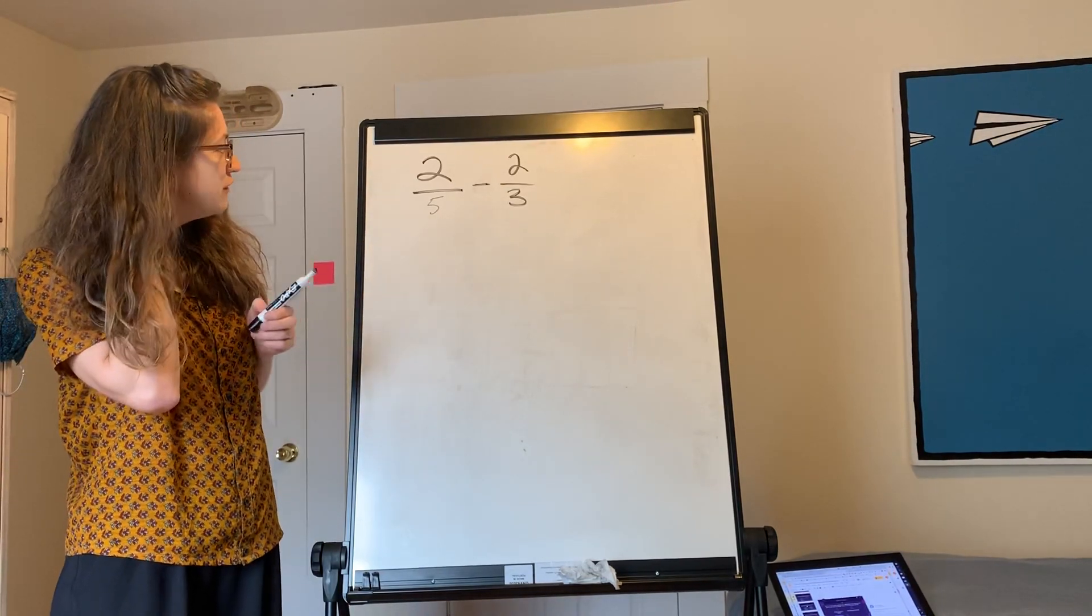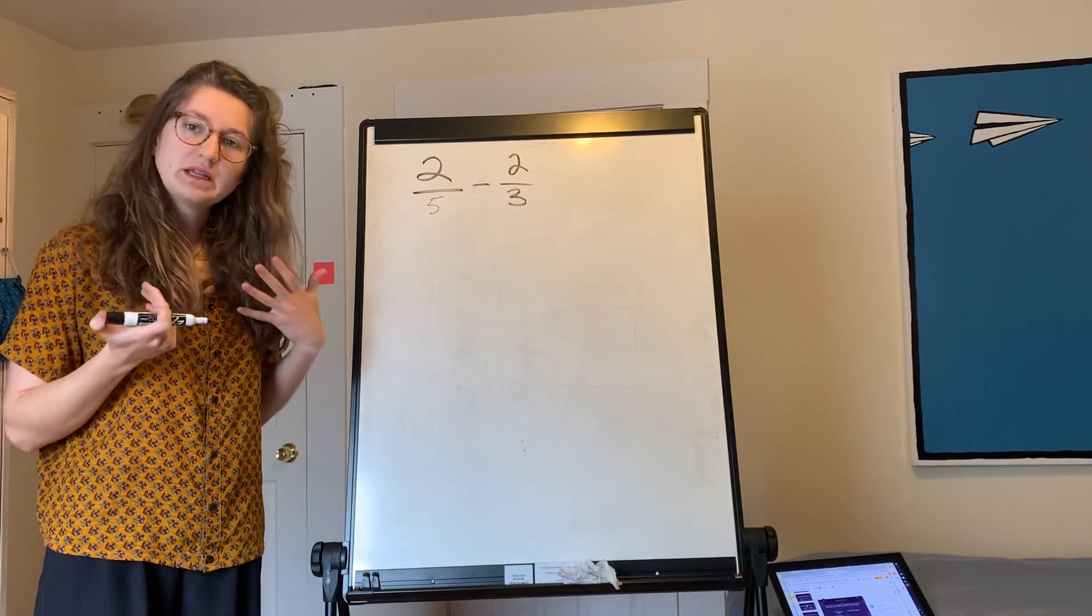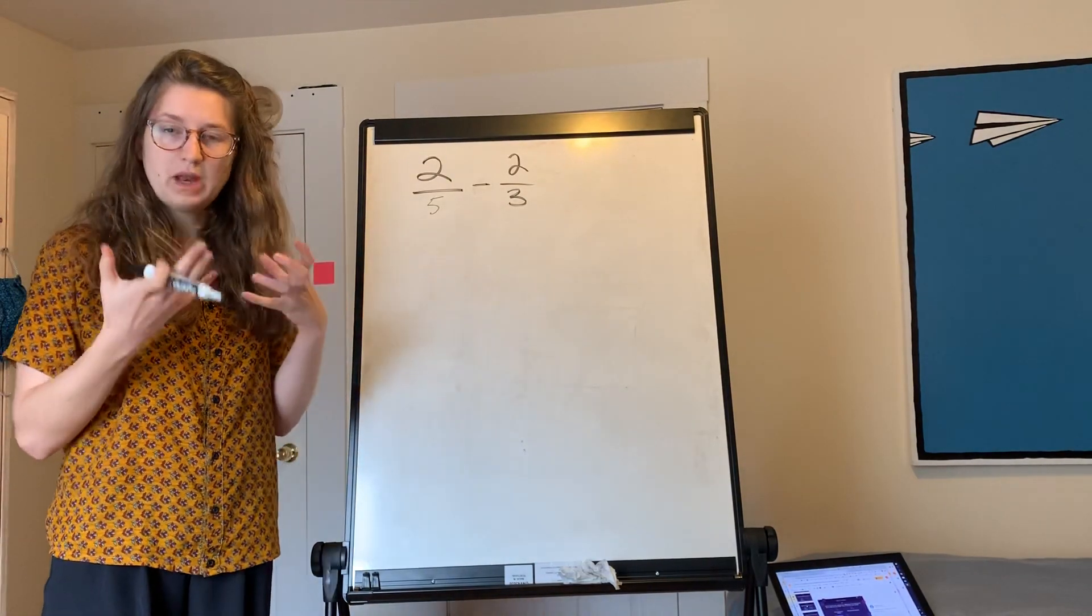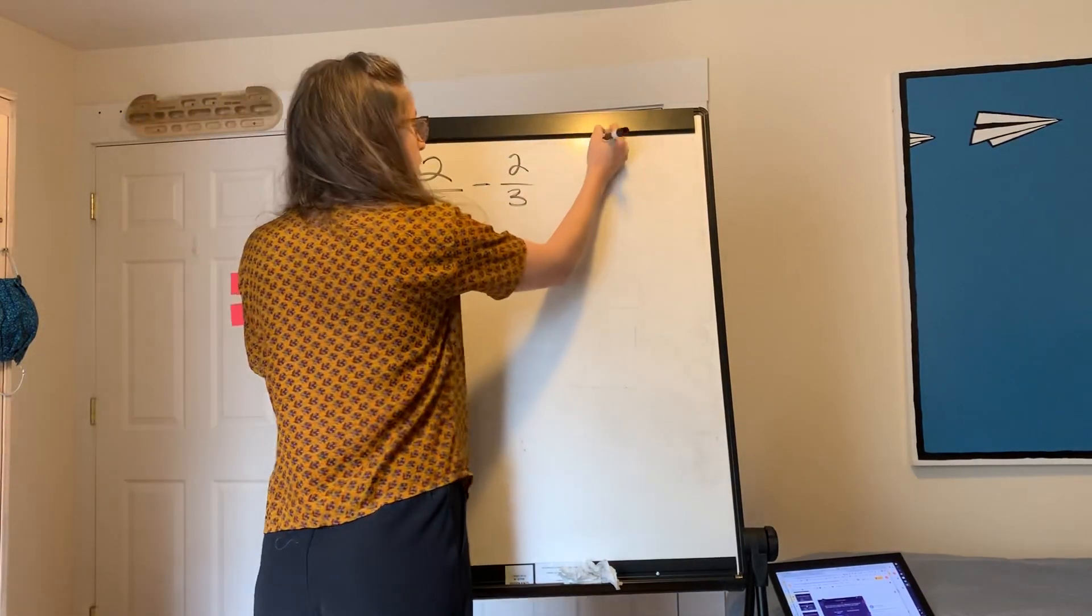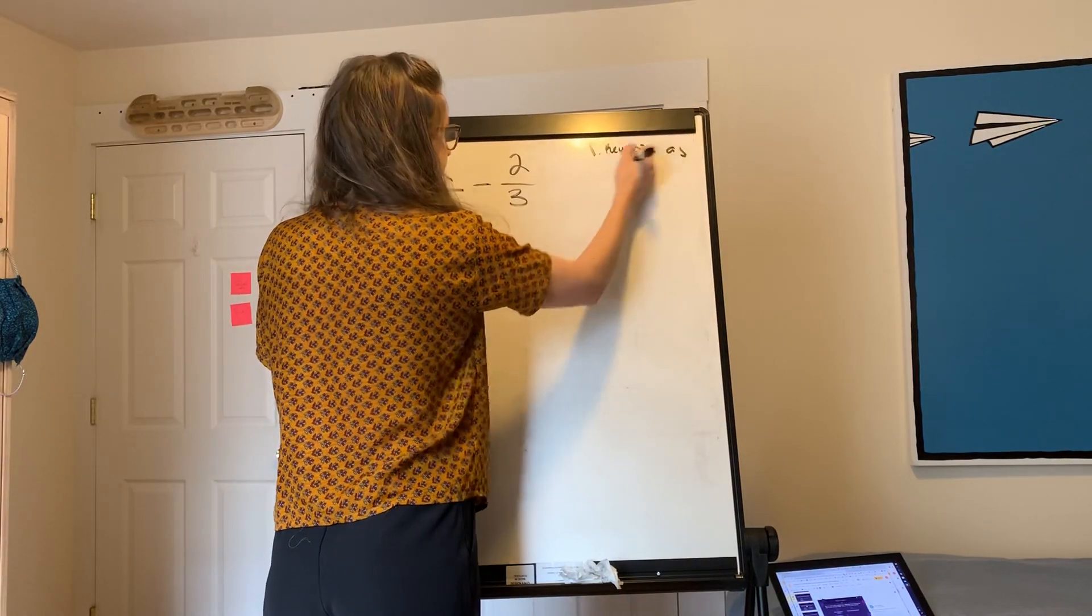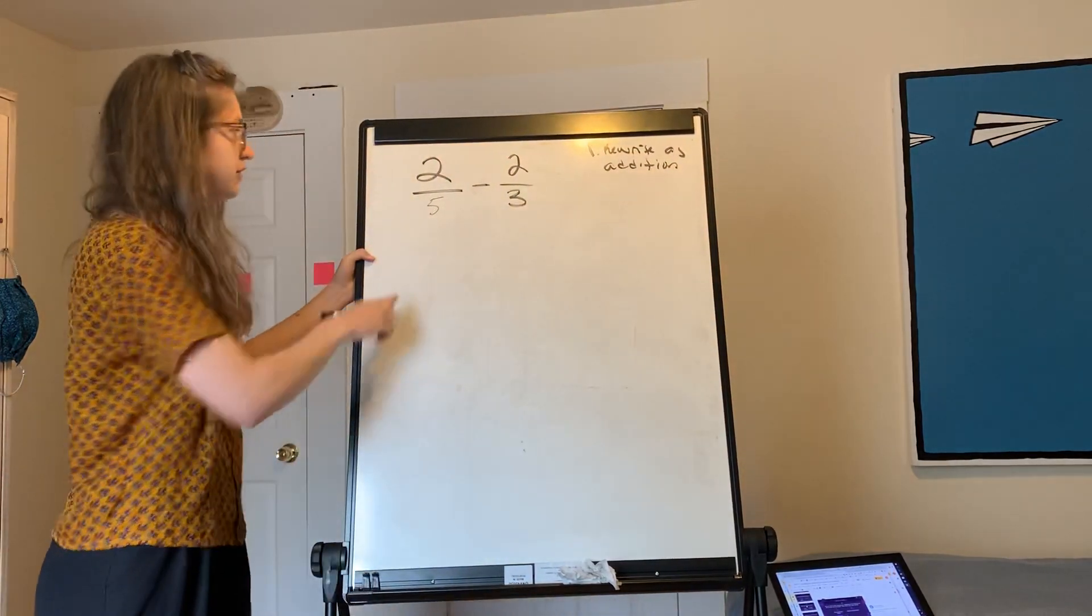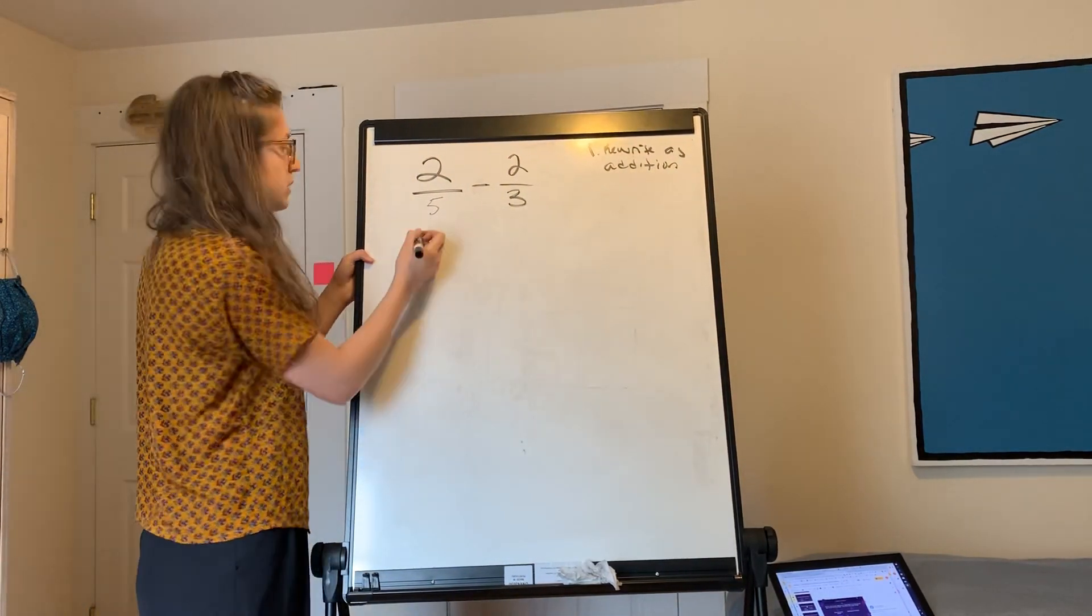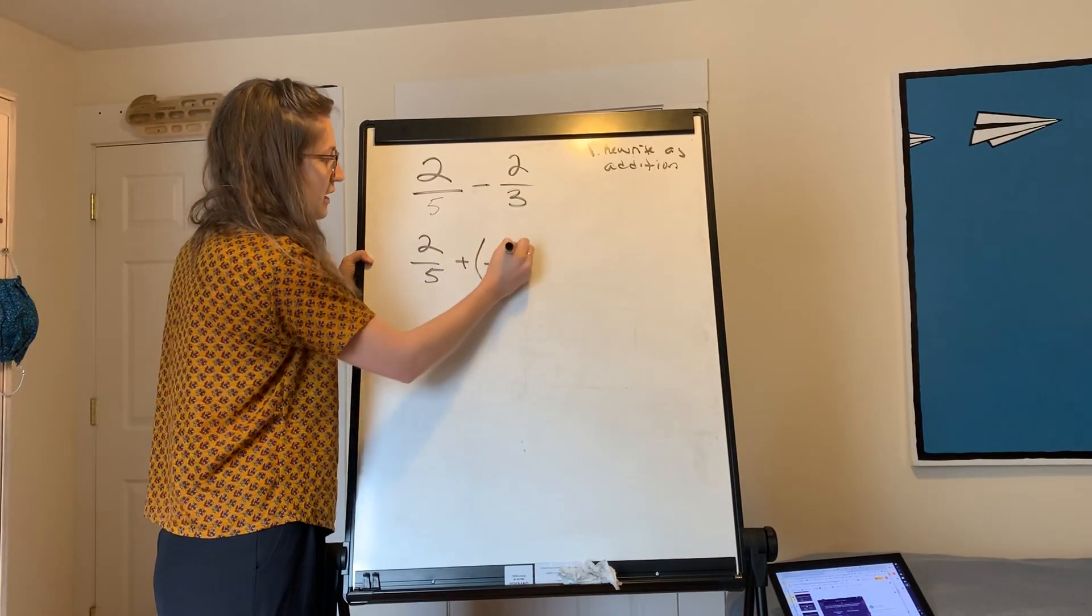So here we've got two-fifths minus two-thirds. Just like when we're dealing with integers, whole numbers, counting numbers, we want to rewrite this. Step one: rewrite as addition. So instead of two-fifths minus two-thirds, we're going to do two-fifths plus a negative two-thirds.